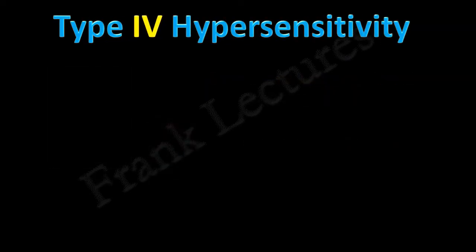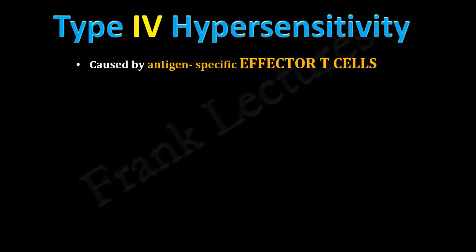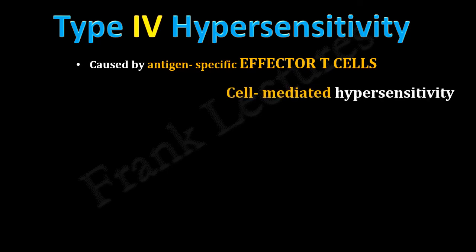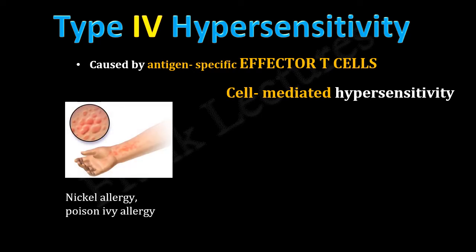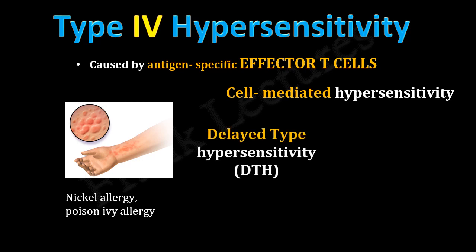Type 4 hypersensitivity reactions are mediated by antigen-specific effector T cells. This is the only class of hypersensitivity reactions triggered by T cells and is therefore also known as cell-mediated hypersensitivity. Examples include nickel allergy and allergic reaction to poison ivy. Type 4 reactions are also called delayed-type hypersensitivity because they become apparent 1 to 3 days after exposure to the antigen.